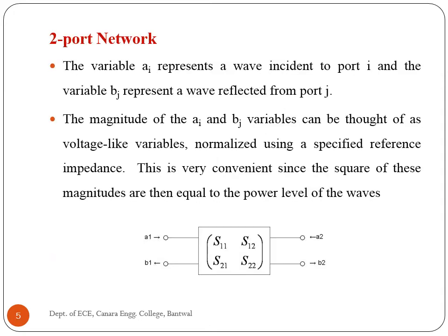The signal at port 1 can be thought of as the superposition of 2 waves travelling in opposite directions. By convention each port is shown as 2 nodes so as to give a name and value to those opposite direction waves. The variable A-I represents a wave incident to port I and the variable B-J represents a wave reflected from port J. The magnitude of A-I and B-J can be thought of as voltage-like variables normalized using a specified reference impedance, so that the square of these magnitudes equals the power level of the waves.